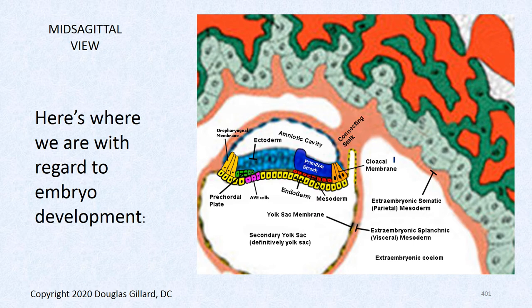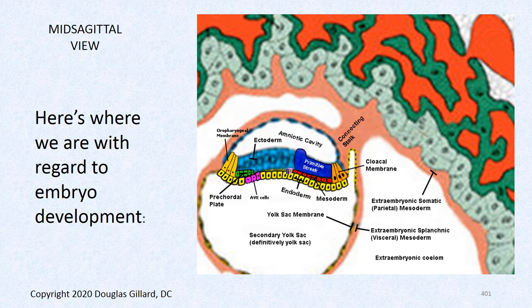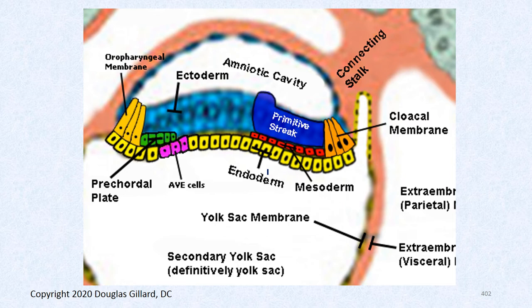So far we've developed: in a mid-sagittal view, we have a primitive streak, a cloacal membrane, an oropharyngeal membrane, ectoderm, endoderm, and some mesoderm forming laterally. The only thing missing now is the notochord. Just like precordial plate cells migrated forward in the midline, the notochord will form exactly the same way — more cells come through with certain genes turned on, and they'll form the super important notochord.